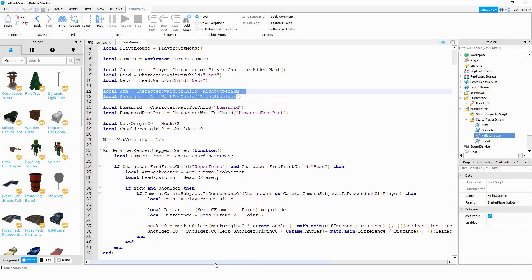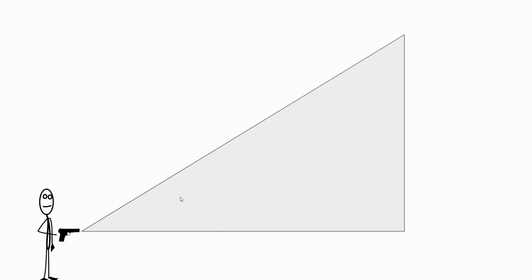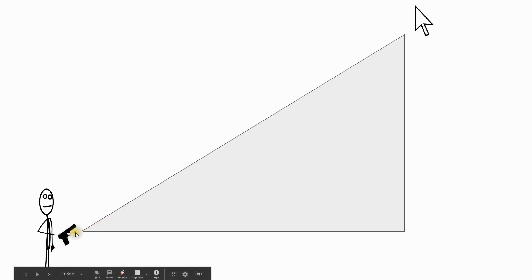Don't worry about trying to copy this from the screen — there's going to be a link in the description where you can just copy and paste it. Now that we have the script, let me try to explain the basics of it. What we're trying to do with the script is always have the gun facing the mouse so that it moves with the camera. So rather than having it facing forward like it is here, we would rather it look like this — we want the gun to always be facing toward the mouse.